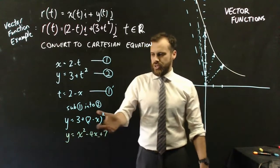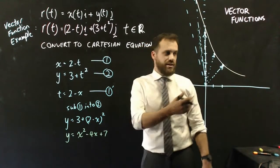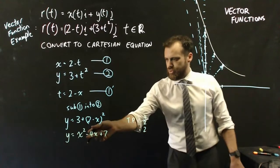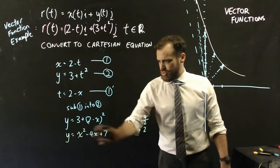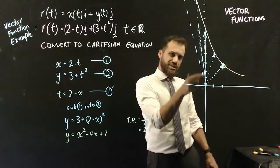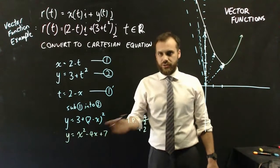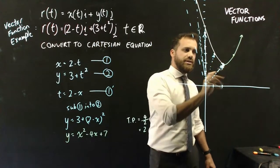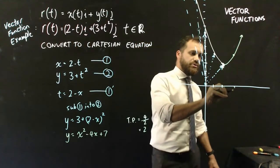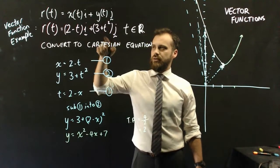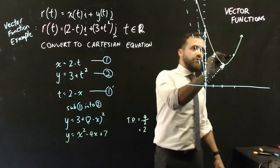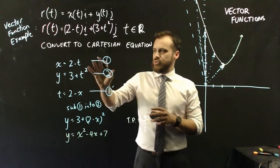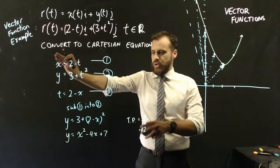That's useful because I can use it to find turning points and x-intercepts. Using negative b over 2a, the turning point is at x equals 4 over 2, which is 2. So my earlier sketch was slightly off. To verify, putting t equals negative 1: x equals 2 minus (negative 1) equals 3, and y equals 3 plus (negative 1) squared equals 4. That checks out.